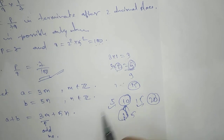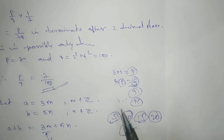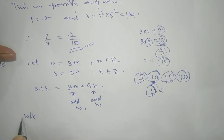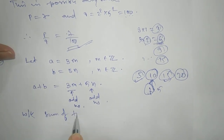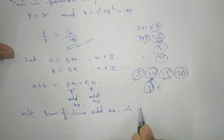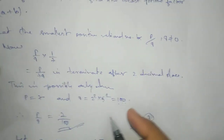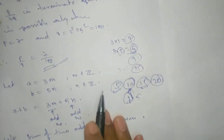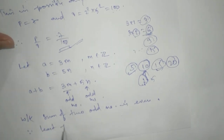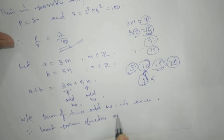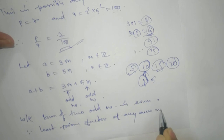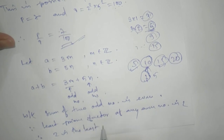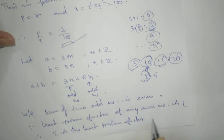So we can see that both a and b must be odd numbers. We know that the sum of two odd numbers is even. And the least prime factor of any even number is 2. Therefore, the least prime factor of a + b is 2.